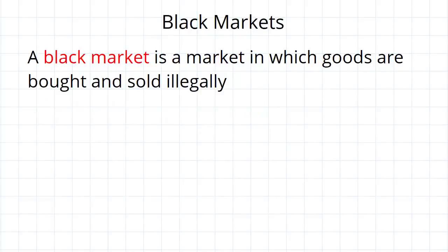So what is a black market? It's just a market in which goods are bought and sold illegally. Now a black market can exist for goods that it is simply not legal to buy or sell — for example, illicit drugs, illegal weaponry, and other such things — but you can also have a black market where legal goods are sold at illegal prices.